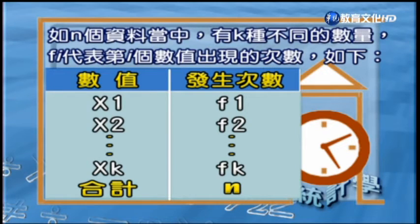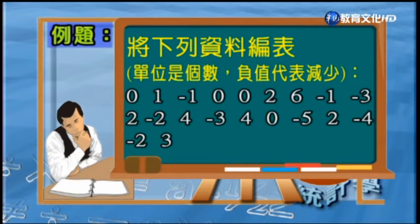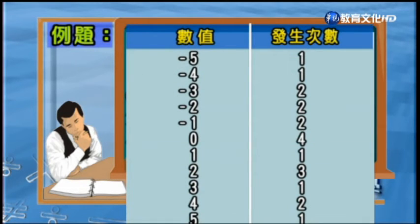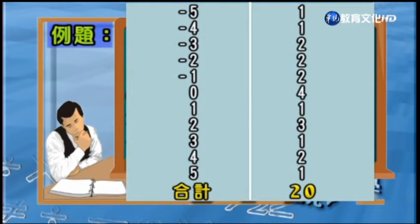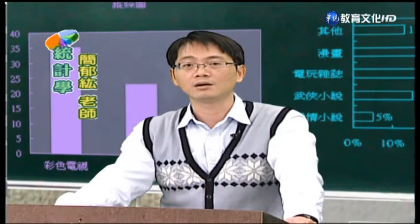首先來看下面這個表格，可以看得出來用X₁、X₂一直到Xₖ分別代表不同數值，而右邊的F₁、F₂一直到Fₖ分別代表各個數值發生的次數。如果針對數量資料按這樣的方法來整理，這就是一種計量資料的次數分配表。以一個例子來做解說，這個例子的數據資料從-5一直到正5，這些資料旁邊則是它們的發生次數，這就是一個很簡單的計量資料次數分配表。